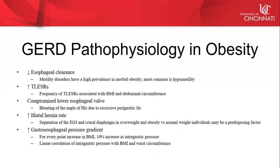What are the pathophysiologic mechanisms of GERD in obesity? We have to think about GERD as the final common pathway of multiple dysfunctions. In obesity, there is reduced esophageal clearance, a high prevalence of motility disorders — most commonly hypomotility — and an increase in transient lower esophageal sphincter relaxations whose frequency is associated with increased BMI and abdominal wall circumference. There can be a compromised lower esophageal valve due to blunting of the angle of His from excessive perigastric fat. There is an increased hiatal hernia rate in obese patients, likely due to increased intra-abdominal pressure causing separation of the esophagogastric junction and the crural diaphragm — consistent with the phrenoesophageal membrane wearing out over time.